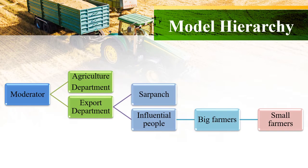This slide presents the systematic hierarchy of the proposed WhatsApp model, based on existing linkages between different nodes. The first hierarchy includes the agriculture and export department. In the second stage, the village Sarpanch and influential villagers are brought together. Further, big farmers — for example, those owning more than 3 acres of land — can be connected by the Sarpanch and influential people. These big farmers can themselves help connect with small farmers, who constitute almost 70% of the population, ensuring end-to-end connectivity.